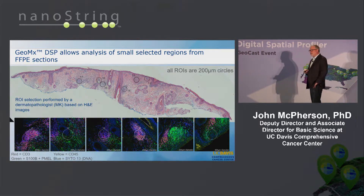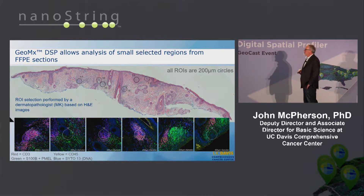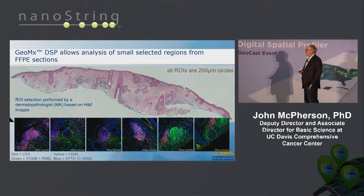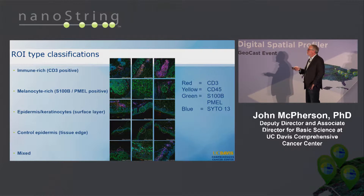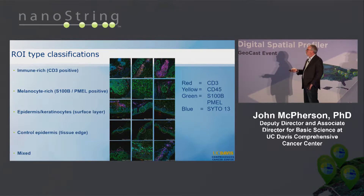Maya was able to log onto the instrument remotely at NanoString. This is the H&E section — she was able to mark it up with the regions of interest we were interested in. These are about 200-micron circles. Combined with the IHC, we could categorize these regions as follows: immune-rich regions, melanocyte-rich, epidermis, and also a control epidermis to the tissue edge, and then a mixed phenotype with multiple things going on. These markers include DNA content, melanocyte markers, and immune infiltrates.